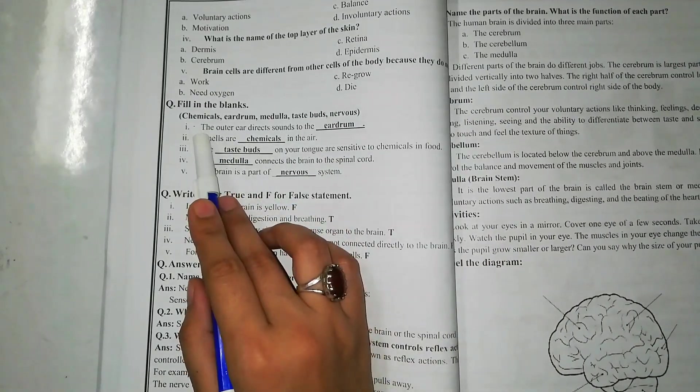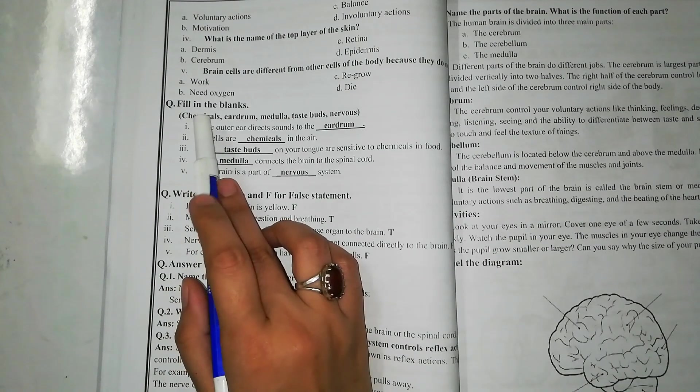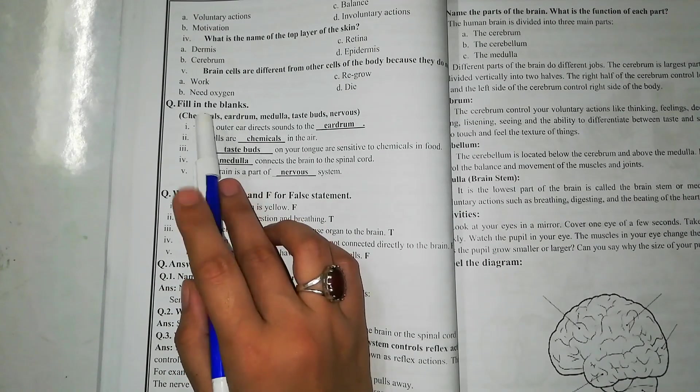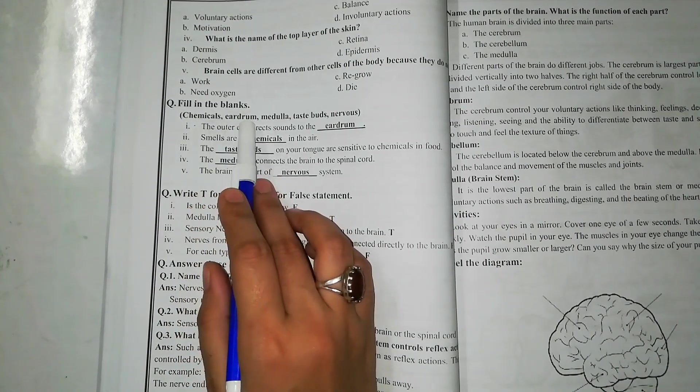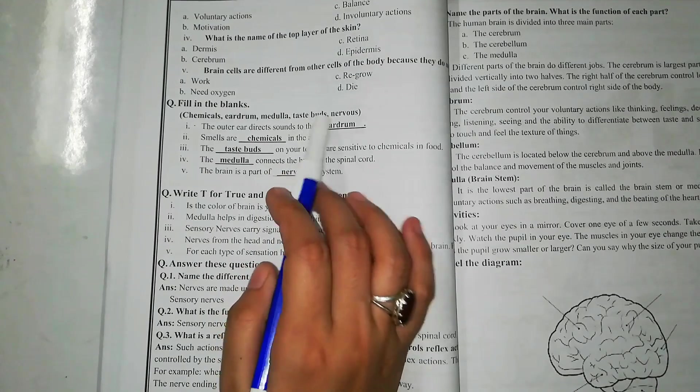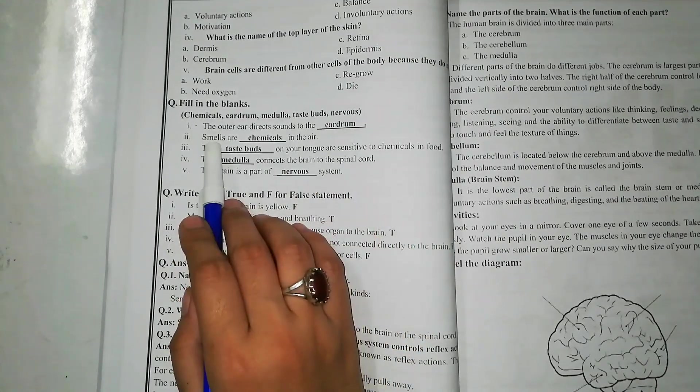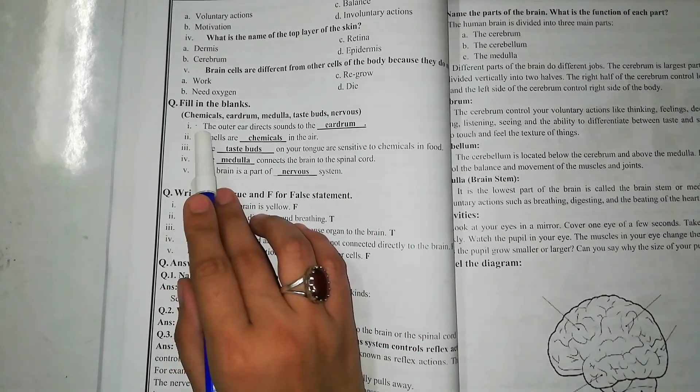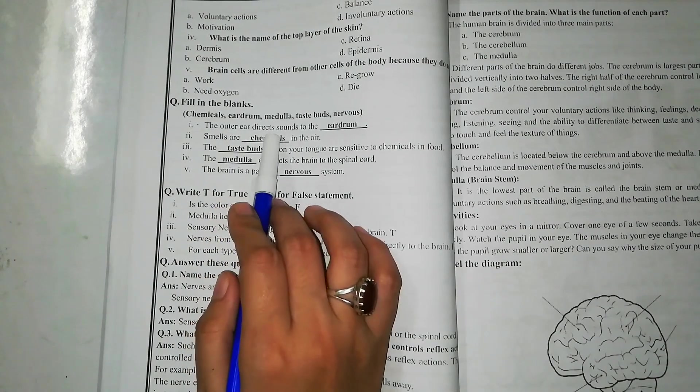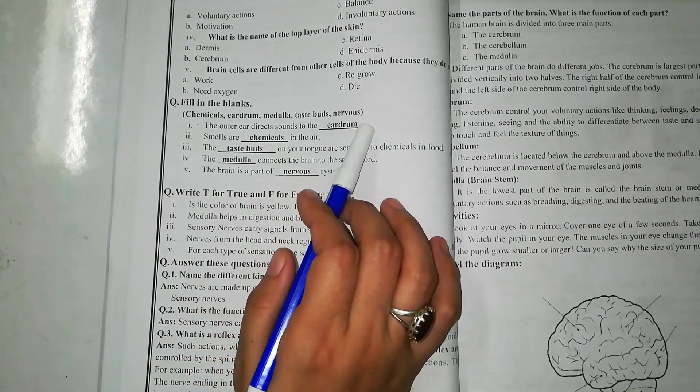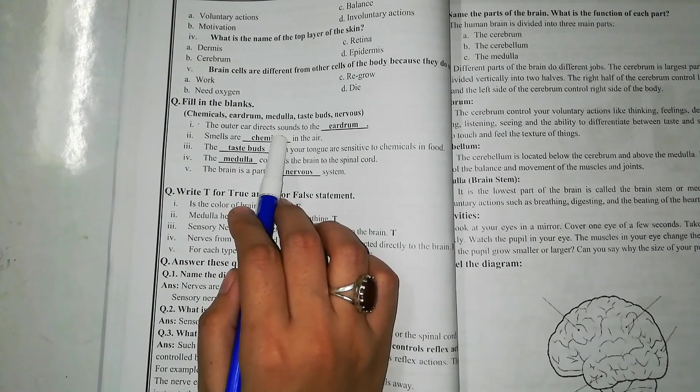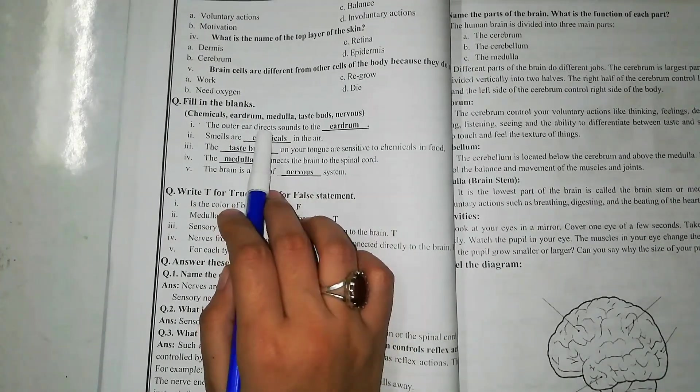Number 1 blank: options are chemicals, eardrums, medulla, taste buds, nervous. Okay students, number 1 blank is: the outer ear directs sound to the eardrum. Eardrum is the correct word for this blank.